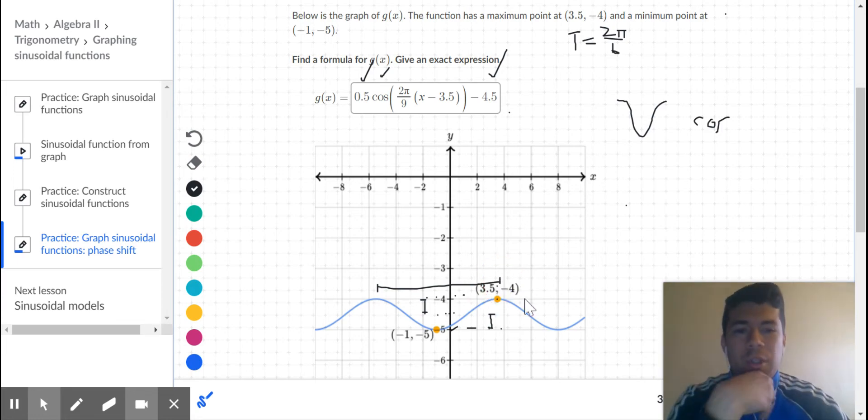But what I do know is the length of half a period. I'm looking at x values from negative 1 to 3.5. That's a distance of 4.5.